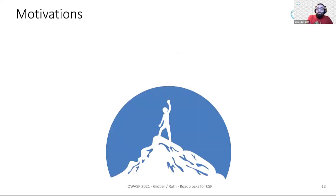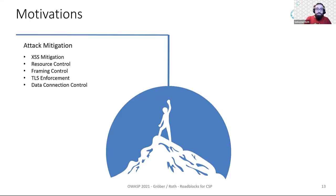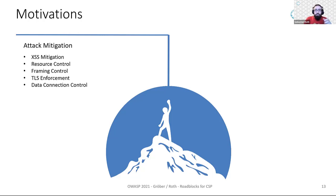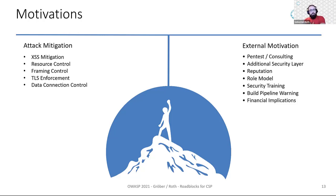One motivation for deploying a CSP was its actual use case: mitigating web-based attacks, including XSS mitigation, TLS enforcement, and fine-grained control over framing, resources, or data connections. There were also external motivations like penetration tests, security training, or an incident that prompted developers to look at CSP. One participant even reported deploying CSP to act as a role model for other web companies, encouraging more widespread adoption.